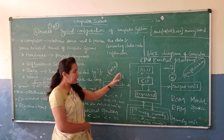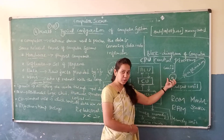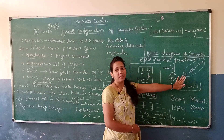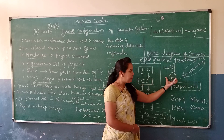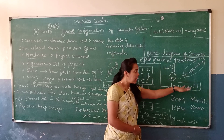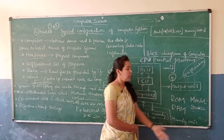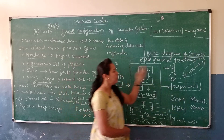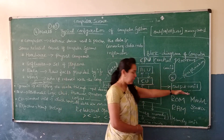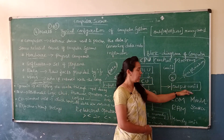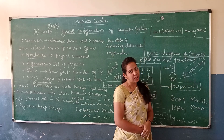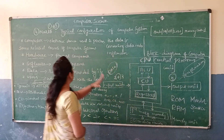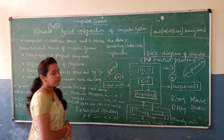So data is the input, then it is processed, and we get the information as the result. So: input data → process → information. That's all about this block diagram of the computer system.